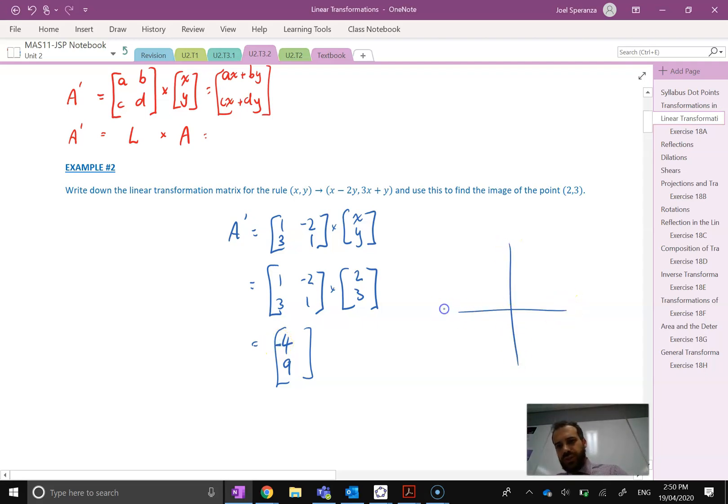So really quickly, on a Cartesian plane, the point was (2,3)—1, 2, 3. And then we applied this linear transformation matrix to it, and we ended up with a point that moved over to here at (-4, 9). Alright, so that one was point A, and that one is the image of A.